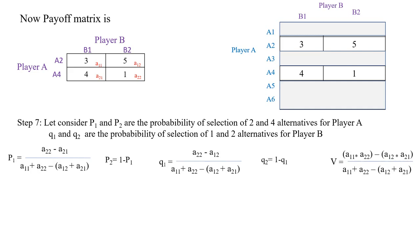From the 2×2 payoff matrix: A11=3, A12=5, A21=4, A22=1. Substituting these values into the standard equations, we get: P1 = 3/5, P2 = 2/5, Q1 = 4/5, Q2 = 1/5, and the value of the game V = 17/5. Thank you.